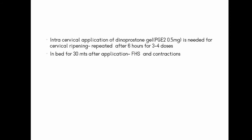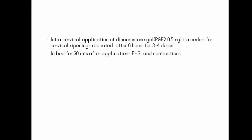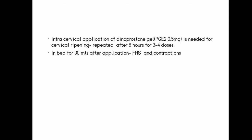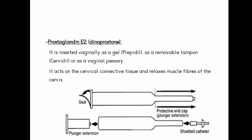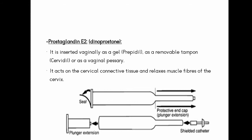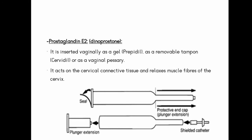Dinoprostone gel is applied every 6 hours, up to 3 to 4 doses. After application, the patient remains in bed for 30 minutes and fetal heart sounds and contractions are monitored. PGF2-alpha causes myometrial contractions. Dinoprostone gel can also be applied as a vaginal pessary.